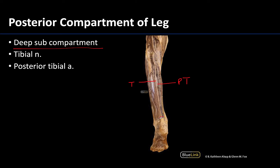We know we're looking at the posterior region because we have a bit of that cut calcaneal tendon visible here. If you see any neurovasculature in this deep posterior region, it will be the tibial nerve and posterior tibial vasculature. Thank you so much for your time and attention as we discuss the muscle compartments of the leg — please feel free to reach out with any questions.